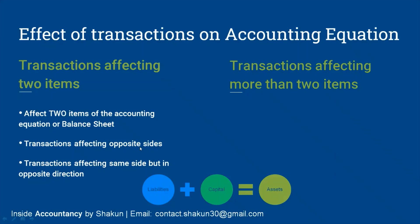Another example is drawings made by the proprietor — the amount withdrawn for personal use. Since the amount is withdrawn from cash, assets decrease. At the same time, capital also decreases because drawings are deducted from capital. An example of a transaction affecting the same side in opposite directions is goods sold on credit: goods go out so assets decrease, while debtors are created so assets also increase.